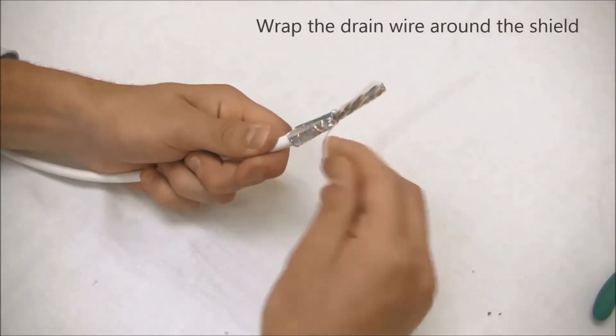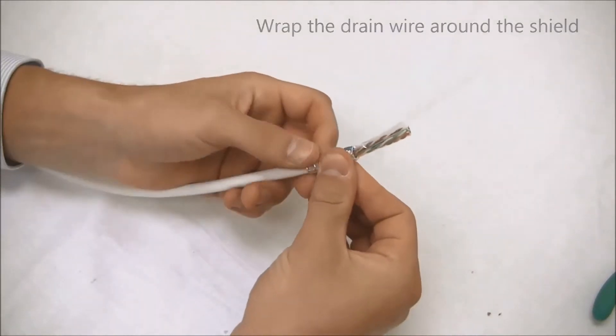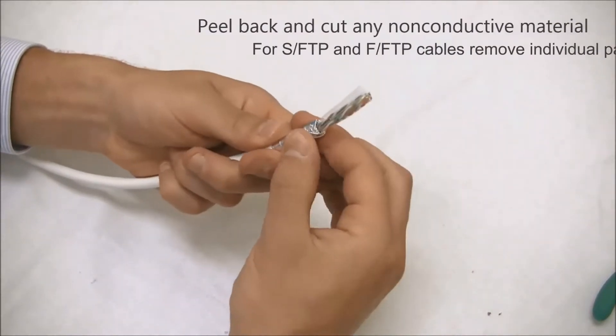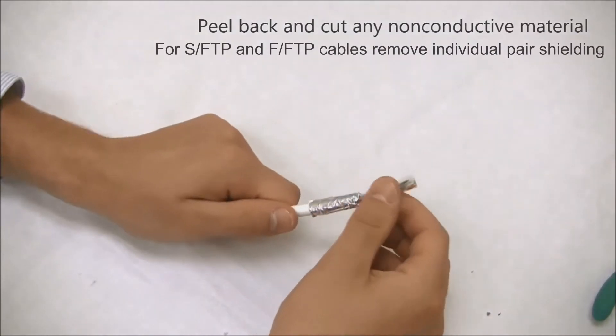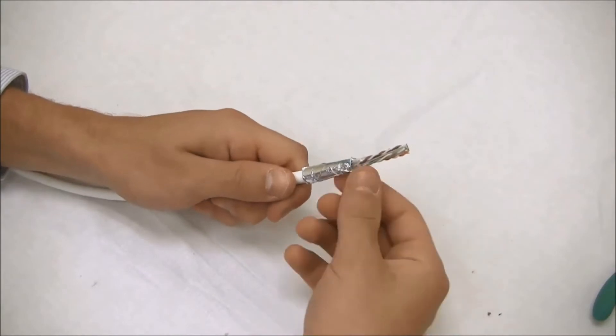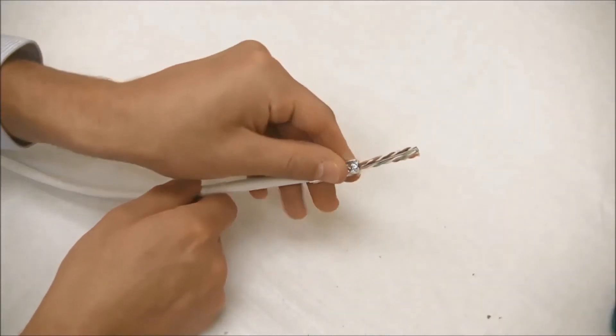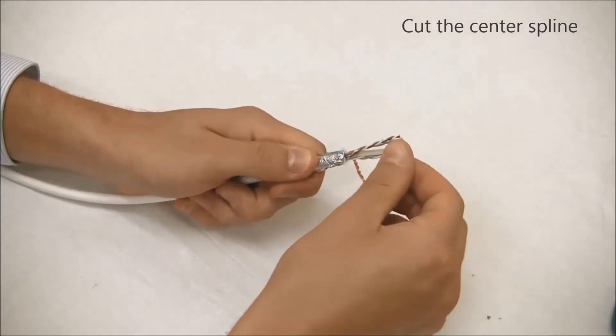Also pull back the drain wire and wrap it around the shield. Next, peel back and cut any non-conductive elements, such as extra plastic film if present. Also, separate the wires and cut the center spline from the cable.